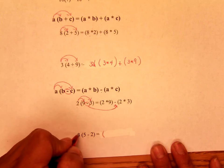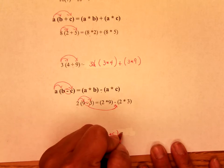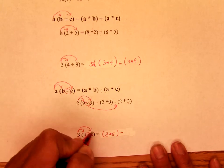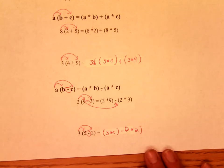So you should have written 3 times 5, here's your subtraction, subtract, and 3 times 2. And remember, everything is in parentheses.